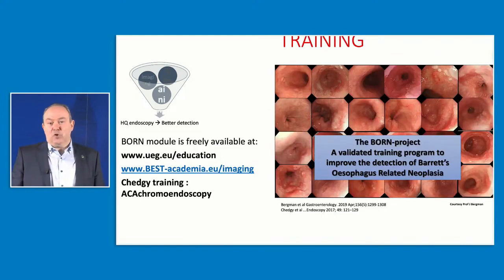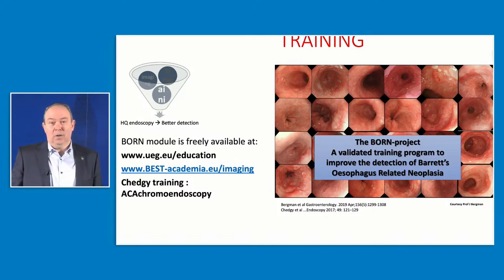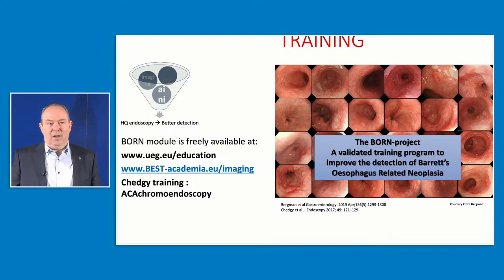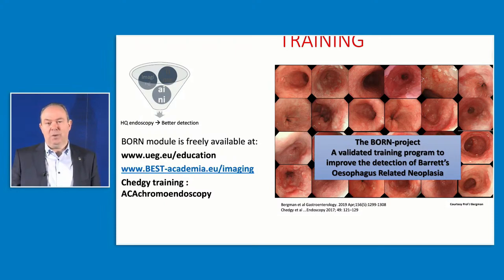It comes down to training. We need to get acquainted with the appearance of subtle lesions. In the past we thought there were no flat lesions in the colon until Bjorn Rambach published a paper in the early 2000s showing they exist in the west too — the same applies to finding these lesions in the upper GI tract. There are training modules available, including the BORN Project, which is online and is a validated training tool to detect small subtle lesions in Barrett's esophagus. By doing that, you will also find more subtle lesions in the stomach, as the appearance of these lesions is quite similar.